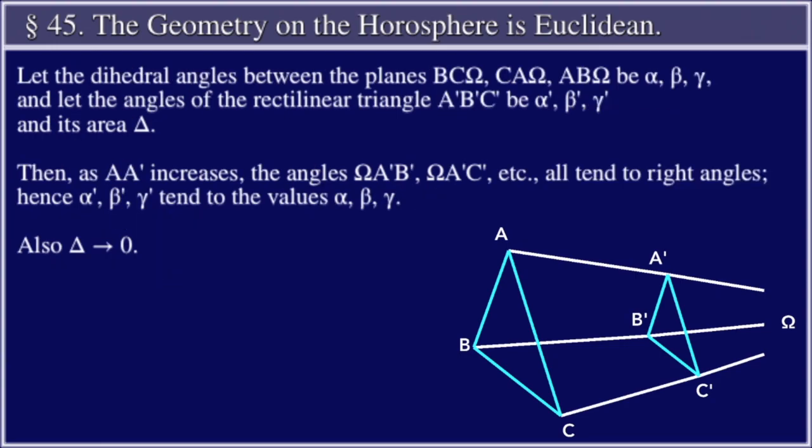Let the dihedral angles between the planes BCΩ, CAΩ, ABΩ be α, β, γ, and let the angles of the rectilinear triangle A'B'C' be α', β', γ', and its area Δ.